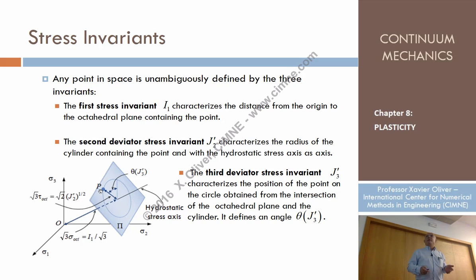In other words, as we know, we can identify this point either by sigma1, sigma2, sigma3, but alternatively, in a unique form as I1, in terms of I1, J'2, and J'3.